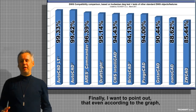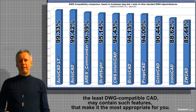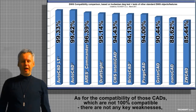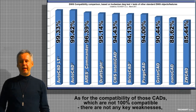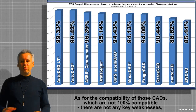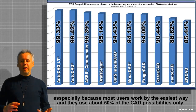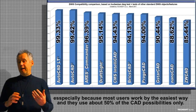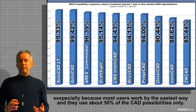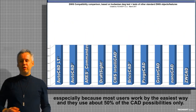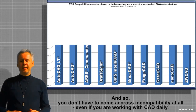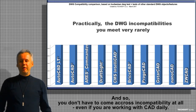Finally, I want to point out that even according to the graph, the least DWG-compatible CAD may contain such features that make it the most appropriate for you. As for the compatibility of those CADs which are not 100% compatible, there are no key weaknesses, especially because most users work in the easiest way and use about 50% of the CAD possibilities only. So you don't have to come across incompatibility at all, even if you are working with CAD daily.